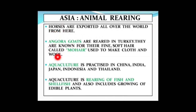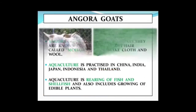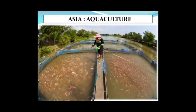The angora goat is reared in Turkey and is very famous for its fur called mohair. Apart from animal rearing, aquaculture — that is the rearing of fish and shellfish and also the growing of edible plants — is also practiced in parts of Asia.